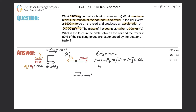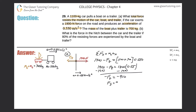Cleaning it up: 1900 minus F_friction equals 1800 times 0.55. Rearranging, negative F_friction equals 1800 times 0.55 minus 1900, which comes out to negative 910. The double negatives cancel, so the force of friction equals 910 newtons.